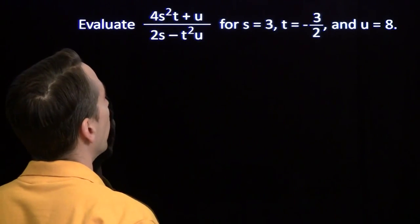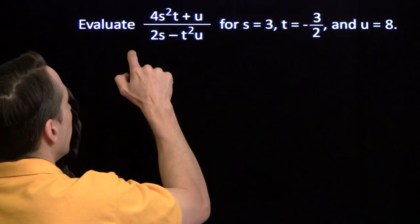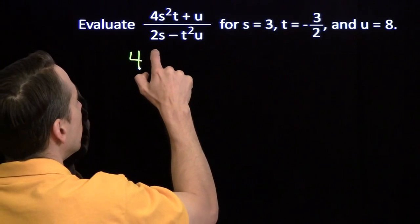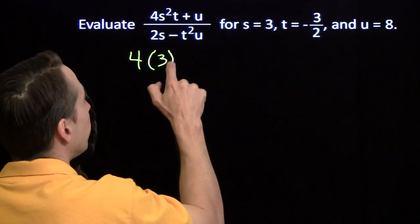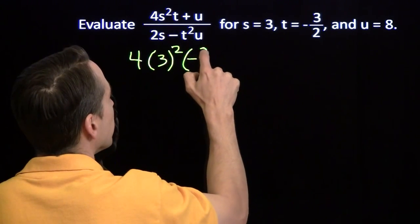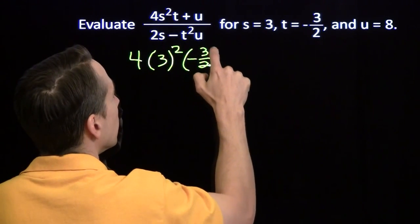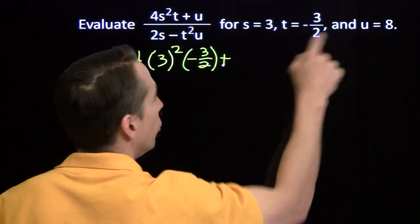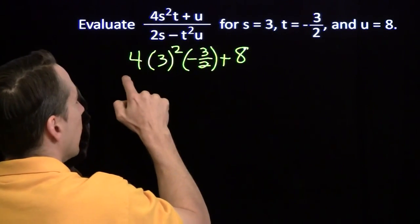So start, oh boy, we have to be careful. We have 4 times, putting in 3 for s, squared. t is negative 3 halves plus u, which is 8. Now the denominator.